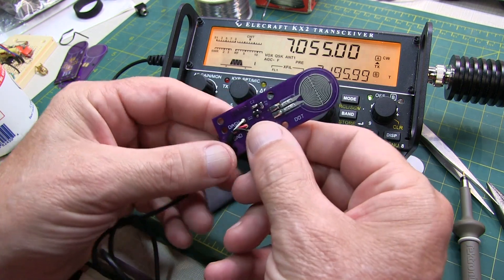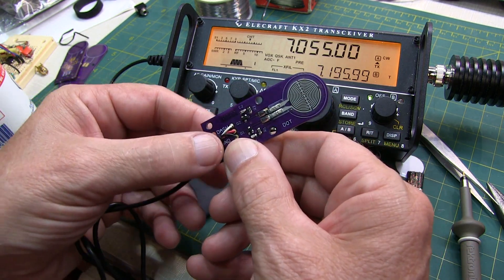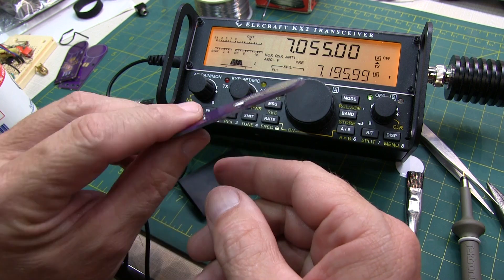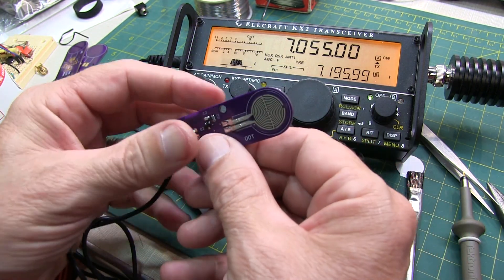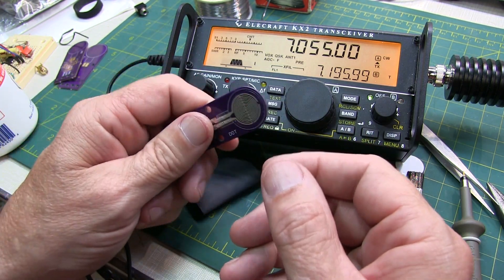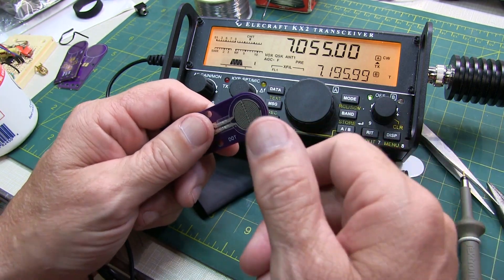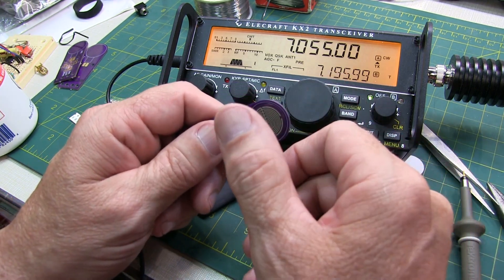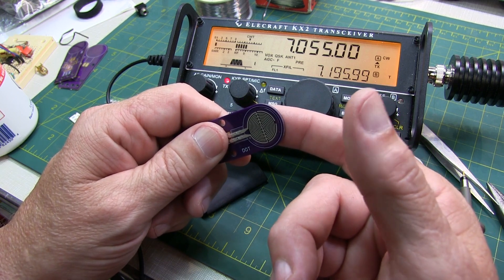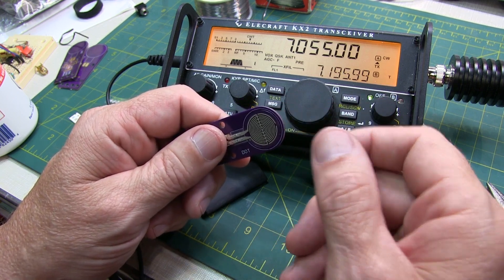All right, before we do any final assembly with attaching the wire and covering it with heat shrink, let's just do a quick test to be sure it works. So the whole idea with this paddle is you just hold it in your hands and touch each side. So this should be the dot side or dit side. And this should be the dash side. Well, looks like it's going to work just fine.